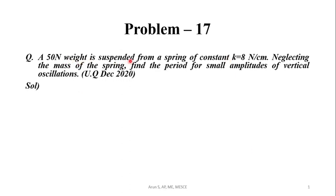A 50 Newton weight is suspended from a spring of constant k equal to 8 N/cm. Neglecting the mass of the spring, find the period for small amplitudes of vertical oscillation.